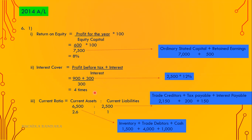Number three: current ratio equals current assets to current liabilities. Total current assets — inventory 1,500, trade debtors 4,000, and cash at bank 1,000 — totaling 6,500. Current liabilities include trade creditors, tax payable, and interest payable. The ratio is 2.6 to 1.